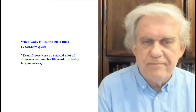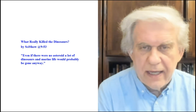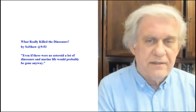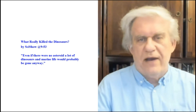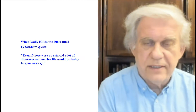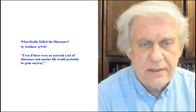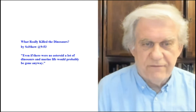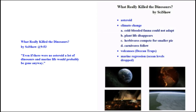A fellow says he went to a YouTube video. The fellow there goes through the whole extinction thing of what happened at the KT extinction — the Cretaceous-Tertiary extinction — which is 65 million years ago roughly, when the dinosaurs died and mammals expanded. One of the statements he makes: even if there were no asteroid, a lot of dinosaurs and marine life would probably be gone anyway. He never explained why he thinks that is the case. When you listen to the video, he just goes in there and regurgitates the party line.